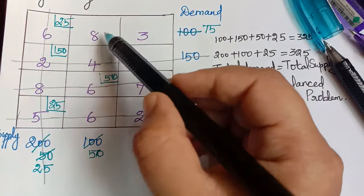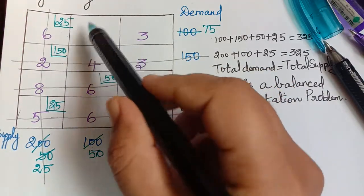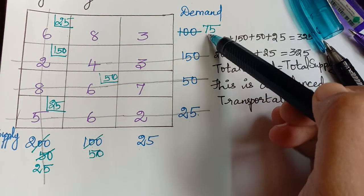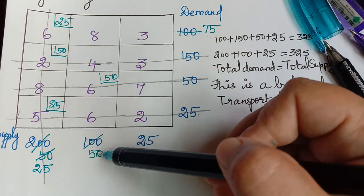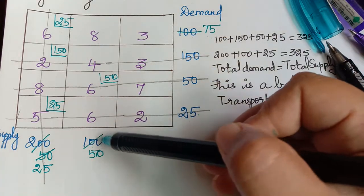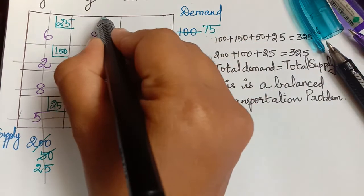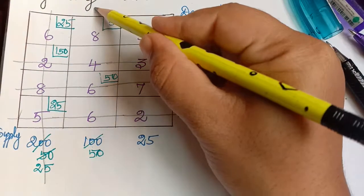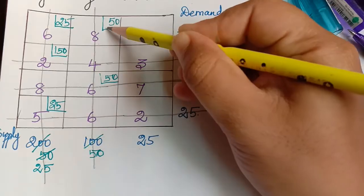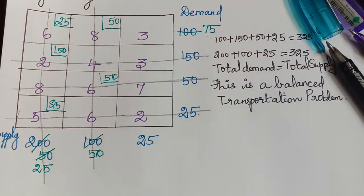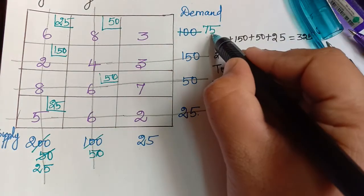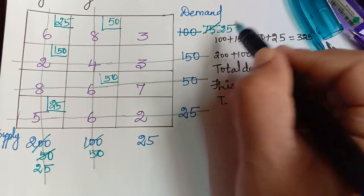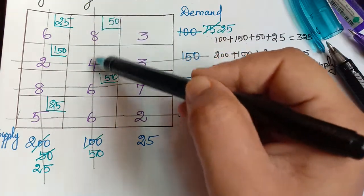Checking the second column, one cell is still not struck off. We make an allocation for this cell. The demand is 75 and the supply is 50, so the minimum is 50. We allocate 50 and strike off the corresponding column. Subtracting 50 from 75 leaves a remaining demand of 25. The second column is now fully struck off, so we move on to the third column.